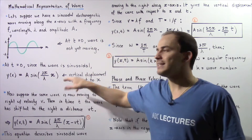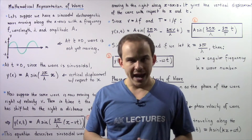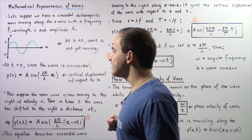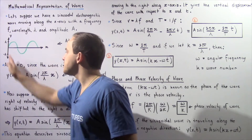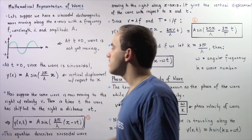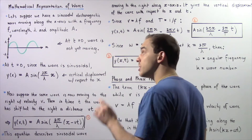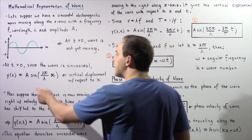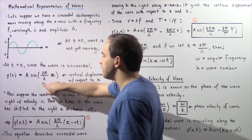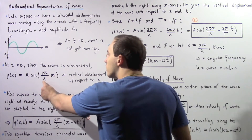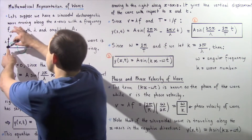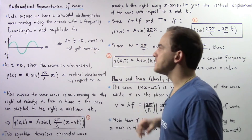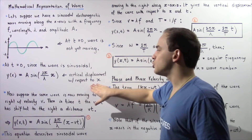So, y of x — where x is our x-coordinate along the x-axis and y of x is our vertical displacement along the y-axis — is equal to A, the maximum vertical displacement (amplitude), multiplied by sine of (2π divided by lambda) multiplied by x, where lambda is the wavelength and 2π represents one full cycle. This entire equation represents the vertical displacement of our stationary wave with respect to x.